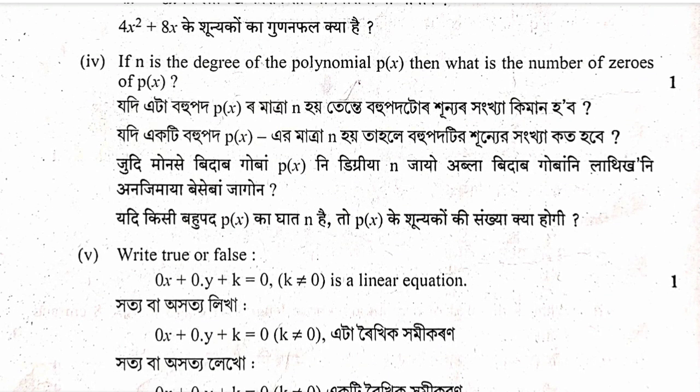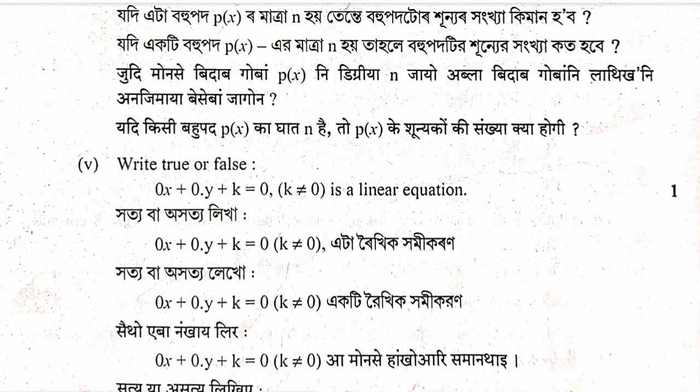Question: If n is the degree of a polynomial p(x), then what is the number of zeros of p(x)? The answer is n. True or false: 0x plus 0y plus k equals 0 is a linear equation.